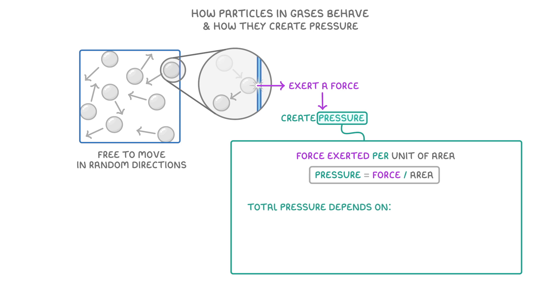The total pressure though is going to depend mainly on two things: how many of these collisions there are, and how much energy each collision involves. And we can use these principles to understand how the temperature, the concentration, and the volume each affect the pressure.